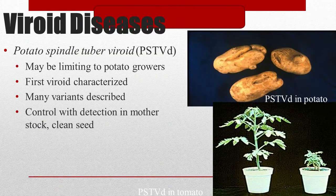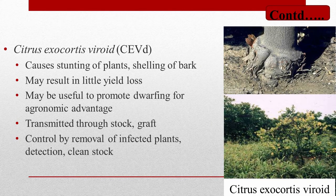Let's discuss about some viroid diseases. The first ever characterized viroid disease is Potato Spindle Tuber Viroid or PSTVd. Next is Citrus Exocortis Viroid, which causes stunting of plants, shelling of bark, and may result in yield loss. It can be transmitted through stalk and graft.